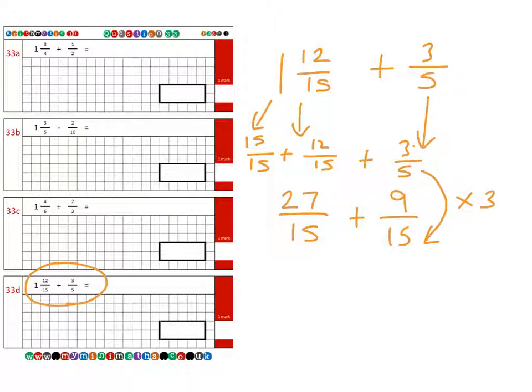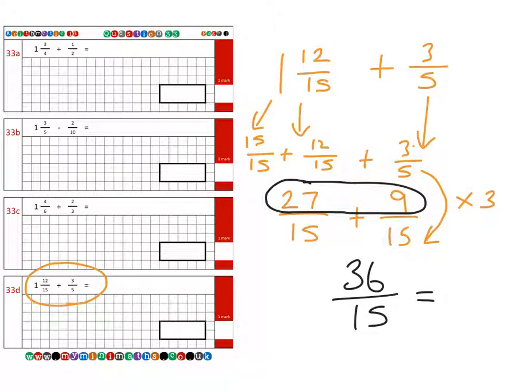We can add 2 numerators together to give us 36 over 15, which is the same as saying 36 divided by 15, which is 2 wholes, and then the 6 fifteenths left over.